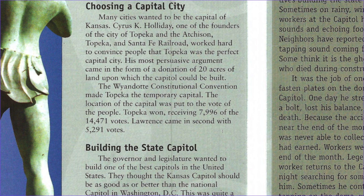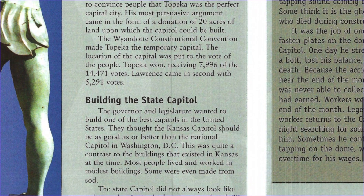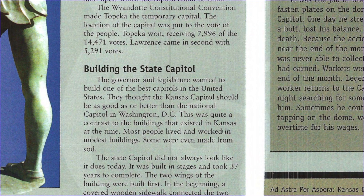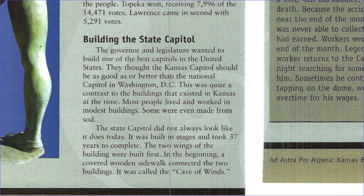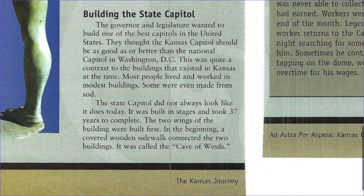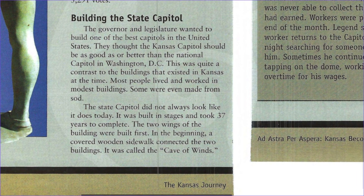Lawrence came in second place with 5,291 votes. Building the state capitol. The governor and the legislature wanted to build one of the best capitols in the United States. They thought that the Kansas capitol should be as good or better than the national capital in Washington, D.C. This was quite a contrast to the buildings that existed in Kansas at the time. Most people lived and worked in modest buildings; some were even made from sod. The state capitol did not always look like it does today. It was built in stages and took 37 years to complete. The two wings of the building were built first. In the beginning, a covered wooden sidewalk connected the two buildings. It was called the Cave of Winds.